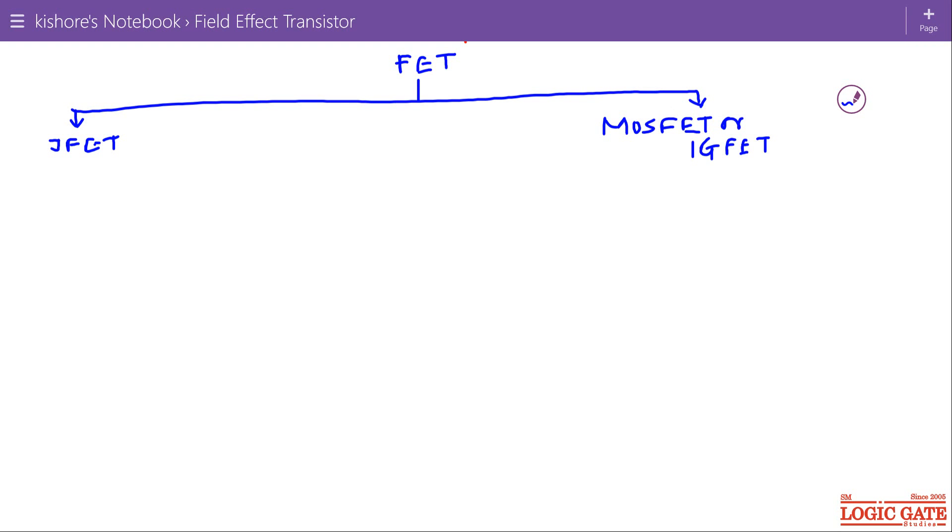In JFET we have N channel JFET and P channel JFET. N channel JFET is denoted by NJFET and P channel JFET is denoted by PJFET.